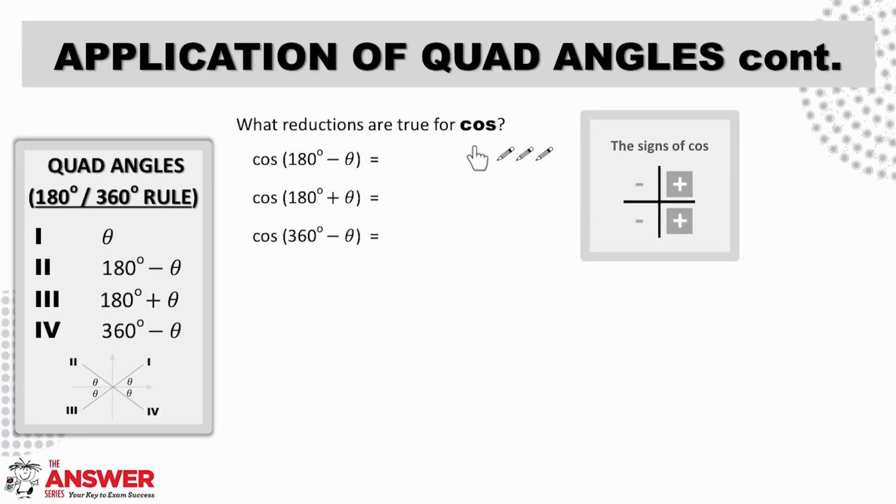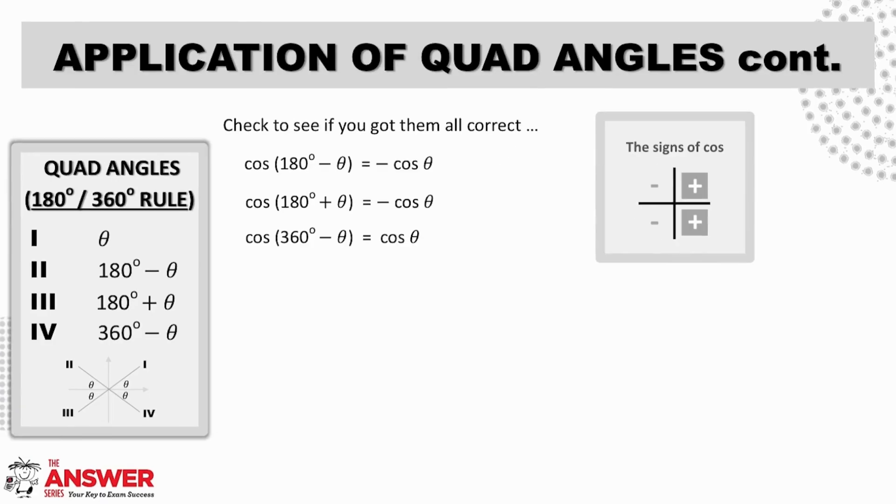On to cos now, what is true for cos in each of these cases? Remember cos is positive to the right of the y-axis where X is positive and negative to the left where X is negative. Pause the video for a moment to give these a think before moving on.